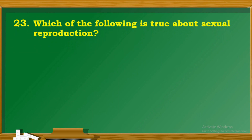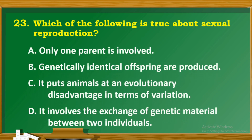Question 23: Which of the following is true about sexual reproduction? A. Only one parent is involved. B. Genetically identical offspring are produced. C. It puts animals at an evolutionary disadvantage in terms of variation. D. It involves the exchange of genetic material between two individuals.